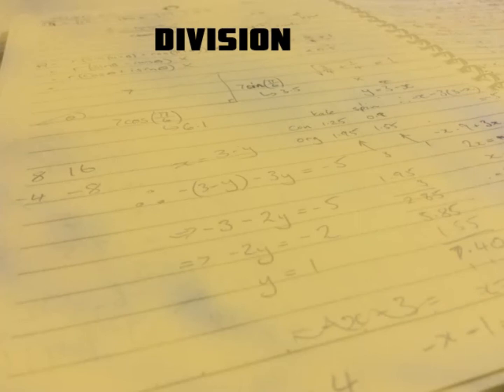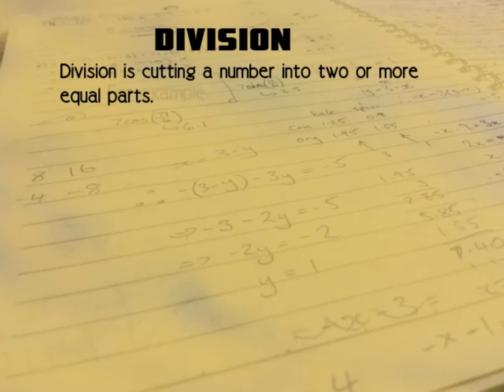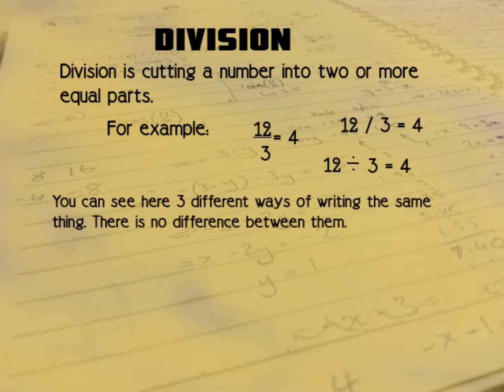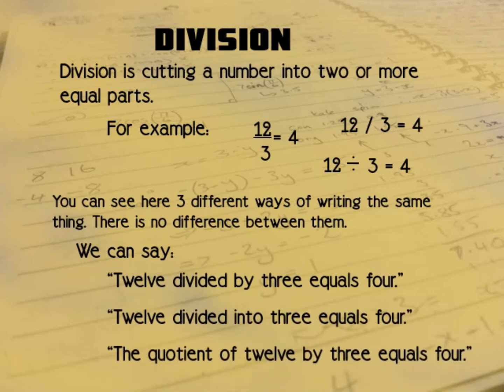And the opposite of multiplication is division. Division is cutting a number into 2 or more equal parts. So for example we can say 12 divided by 3 equals 4, and you can see that we can write this in 3 different ways, but they all mean the same thing. They are all ways of writing out a division. We can talk about them in different ways: 12 divided by 3 equals 4, 12 divided into 3 equals 4, and sometimes you see the quotient. The quotient of 12 by 3 equals 4. This can be confusing, sometimes people get the numbers backwards, but a quotient is basically like a fraction.